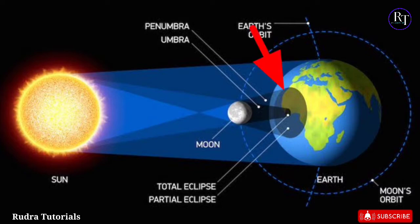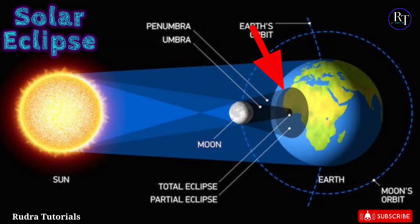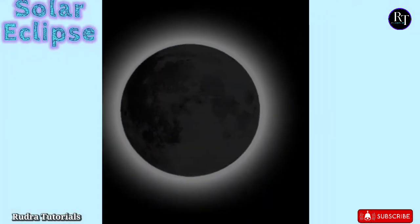Students, remember one thing: in a solar eclipse, the dark side of the Moon faces the Earth, and therefore it will always appear on a new moon day, meaning Amavas.